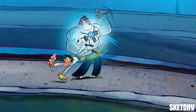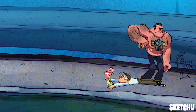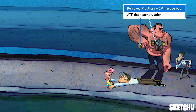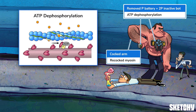Fun fact: lack of ATP is also the reason behind rigor mortis. No more ATP after death means no more cross-bridge uncoupling, which means sarcomeres stay contracted. By removing a P battery, Mr. Myosin deactivated the bot — it's no longer glowing. This represents that after ATP binds myosin to break the cross-bridge, ATP undergoes dephosphorylation to create ADP and phosphate. This causes the myosin head to return to a cocked, high-energy state, ready to bind again.